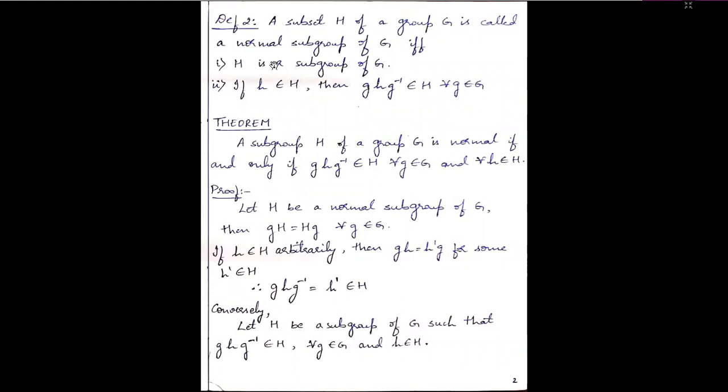Next definition: a subset H of a group G is said to be a normal subgroup of G if and only if H is a subgroup of G, and if h belongs to H then gHg⁻¹ must belong to H. So if H is a normal subgroup, it has to satisfy these two conditions: H should be a subgroup of G, and gHg⁻¹ must be an element of H. If both hold, then H is a normal subgroup of G.